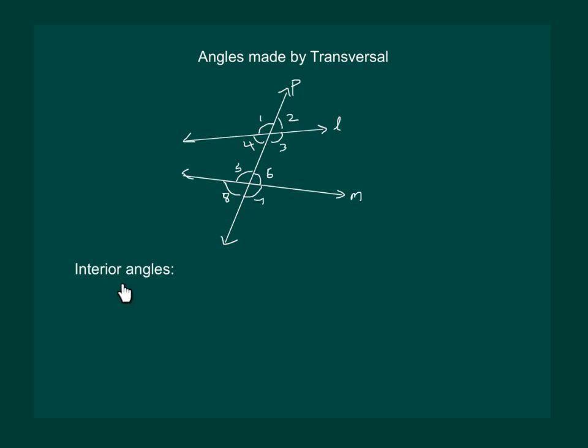Firstly, interior angles means angle 3, 4, 5 and 6 are interior angles. Then, obviously, angle 1, 2, 7 and 8 would be exterior angles.